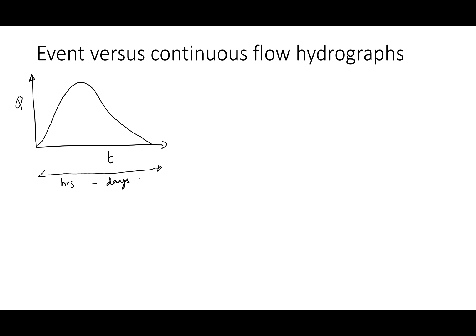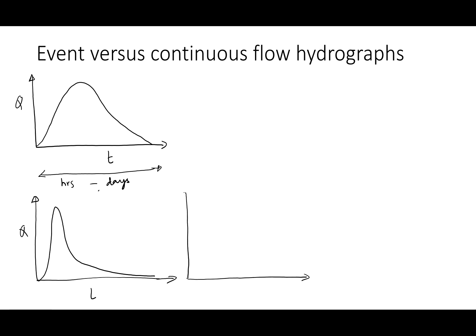This is how a nice single-peak hydrograph looks from a single event. Depending on the land use and rainfall distribution in both space and time, you can have a hydrograph with a high peak, steep rising and falling limbs, and very short time to peak. Or, if you have a rural or forested area, or if the rainfall is not that intense, you may end up with a hydrograph that has a very flat shape, smaller peak value, and higher time to peak.